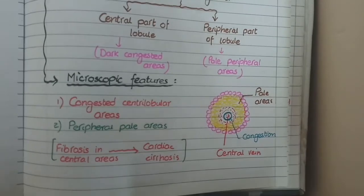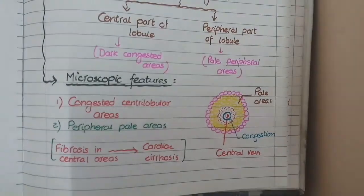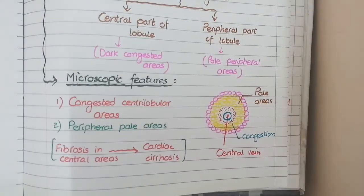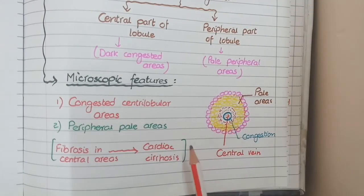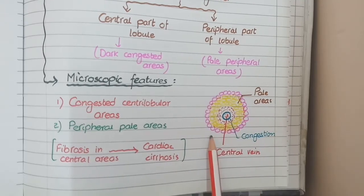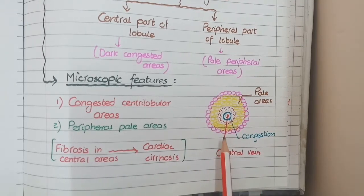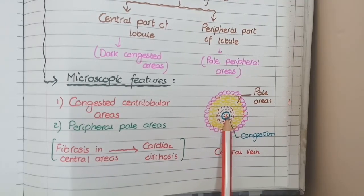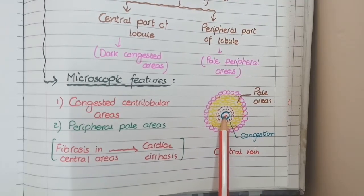On microscopic view, you will again be able to see the hepatic lobules. One of these hepatic lobules is shown in the diagram, and you can see that the central zone of the lobule appears red due to congestion of the central vein, while the peripheral areas are brown or pale.